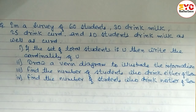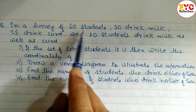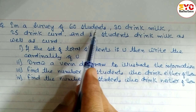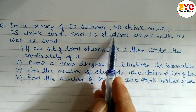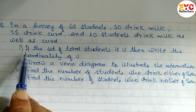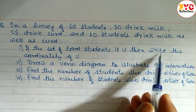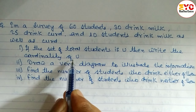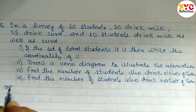This is a Class 10 Sets question from the new course exercise. The question says: In a survey of 60 students, total number of students is 60. 30 drink milk, 25 drink curd, and 10 students drink milk as well as curd. We need to find the intersection. Let's write the solution — first, what are the given information?